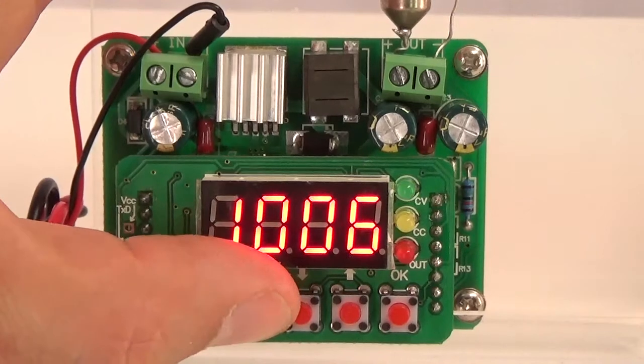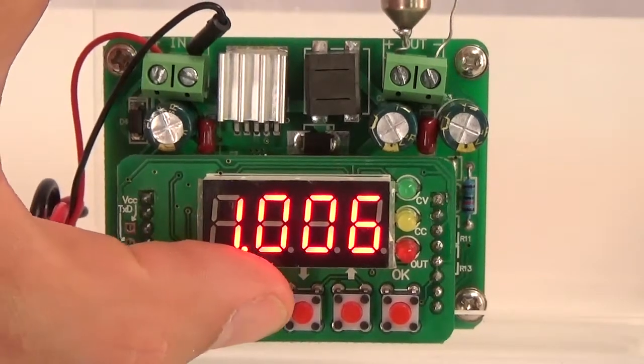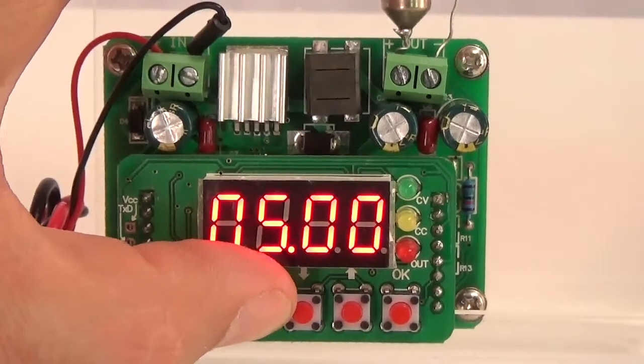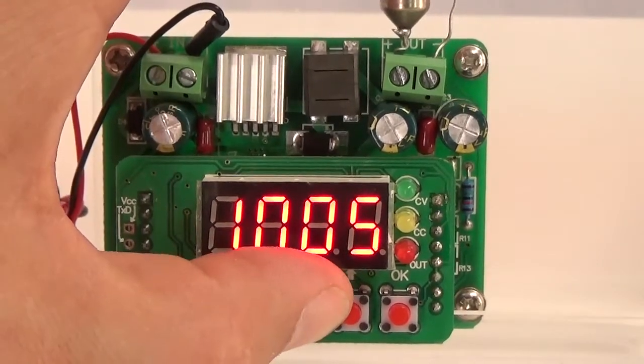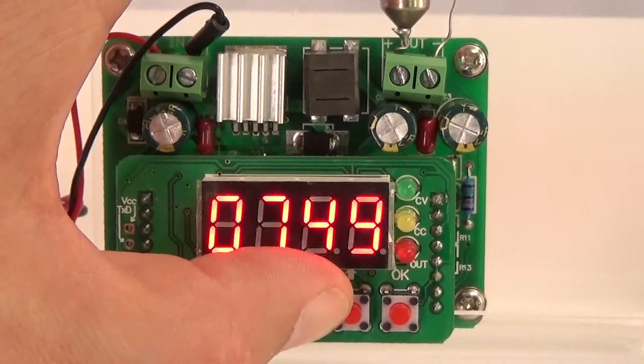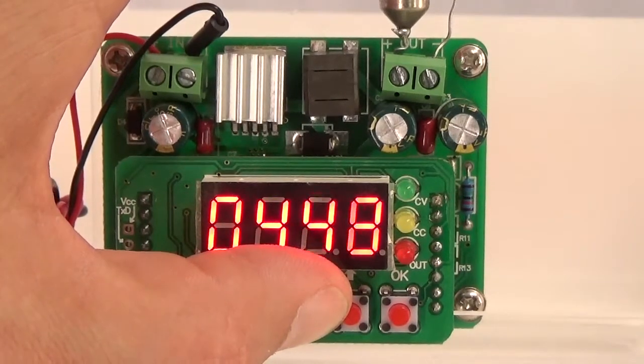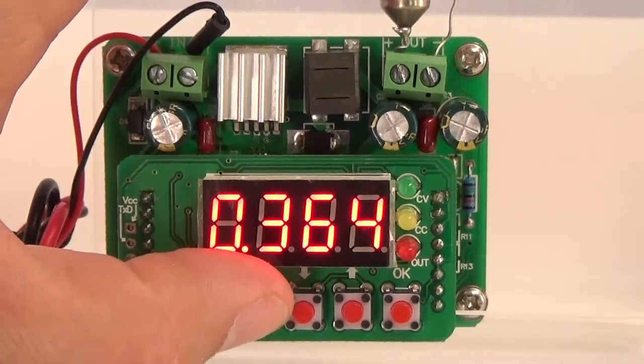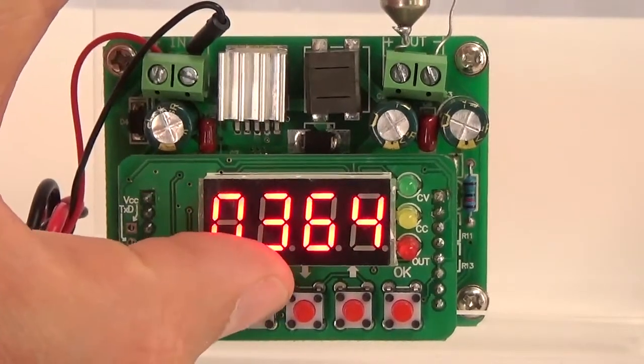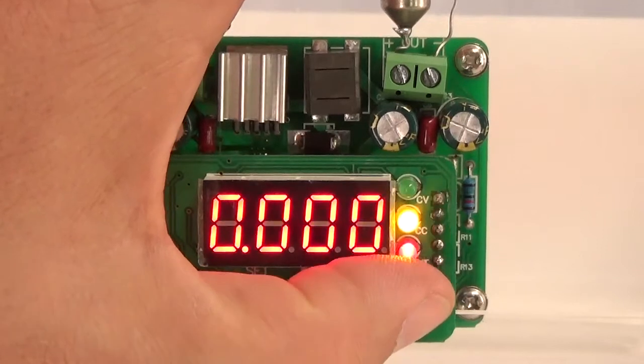So, if we go to set menu, switch off the output, go to the mA, and then adjust it to 300 something, doesn't matter, as long as it is below 400. I will press the set button to memorize it, I can see the 4 lines.